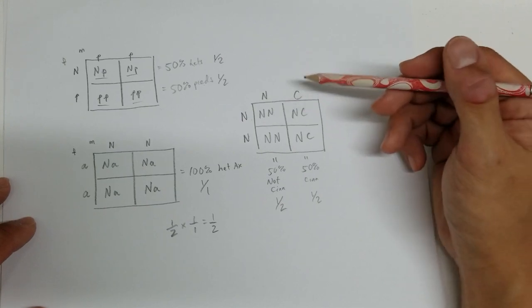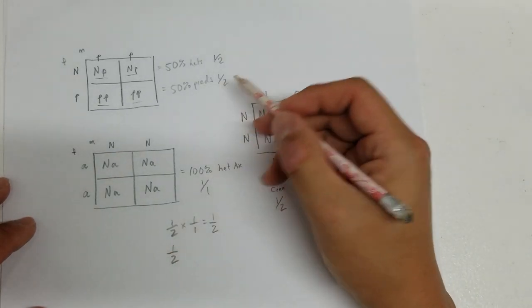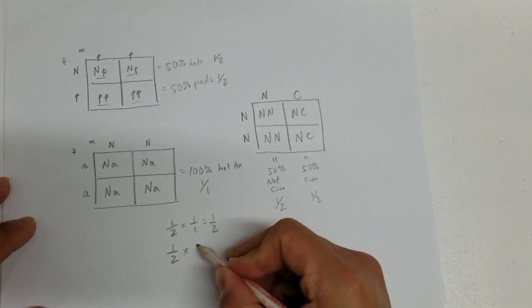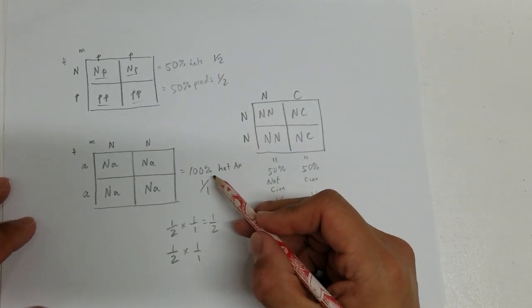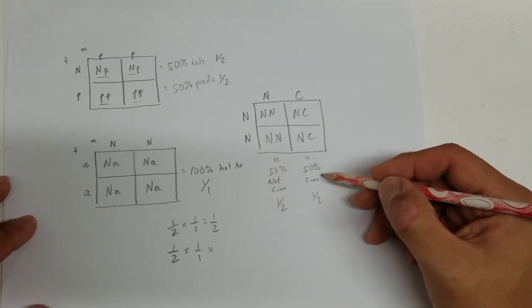So now let's say we want to calculate the chances of getting a pied that is het for xanthic and also cinnamon. So now we take all three of those fractions. So we have 1 half for pied, times 1 over 1 for our chances of hitting a het for xanthic, times the chances of hitting a cinnamon.